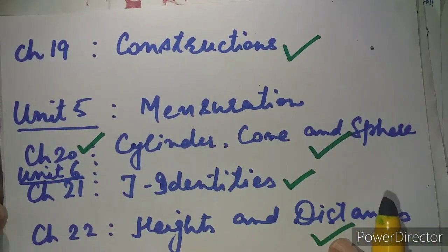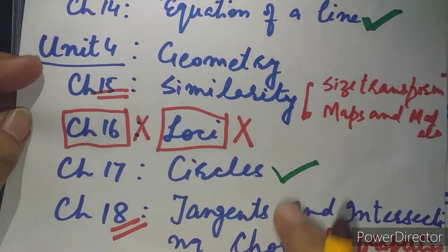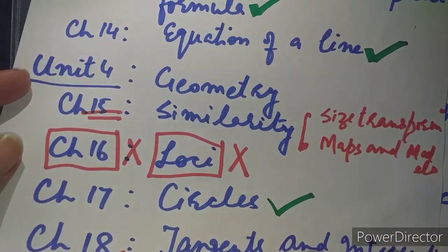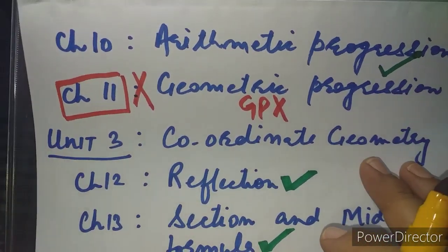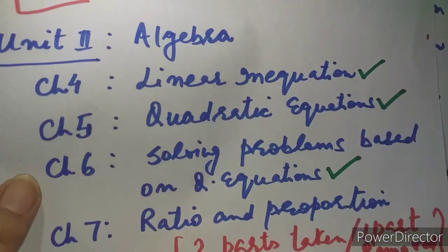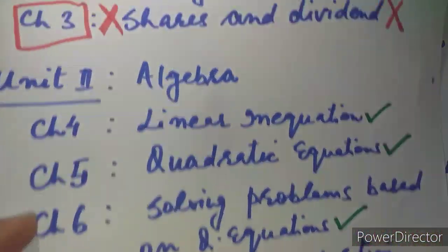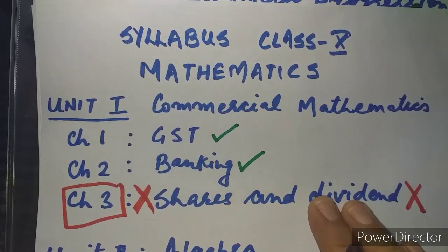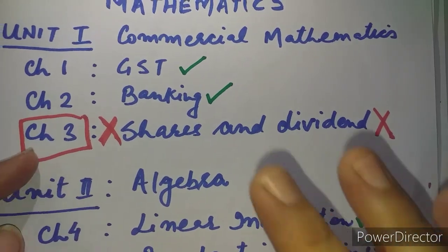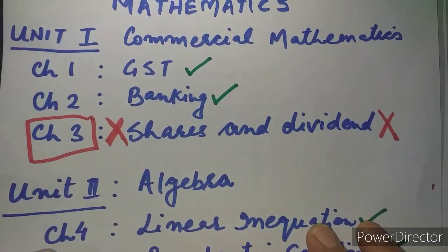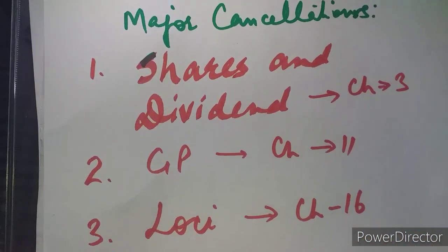To summarize: Unit 7 retained as it is, Unit 6 retained as it is, Unit 5 retained as it is. In Unit 4 (Geometry) there are some noticeable changes. Unit 3 included without any change. From Algebra, GP totally goes, and Ratio and Proportion has some parts removed. The major change in Unit 1 (Commercial Mathematics) is that Shares and Dividend has been totally removed.